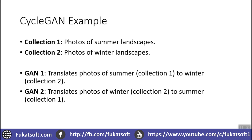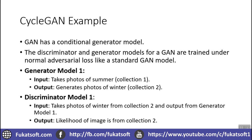Here is another example of how CycleGAN works: we have a collection of summer landscapes and another collection of winter landscapes. GAN1 has to translate photos of summer to winter collection, and GAN2 has to translate photos of winter to summer collection. GAN1 is a conditional generator model.